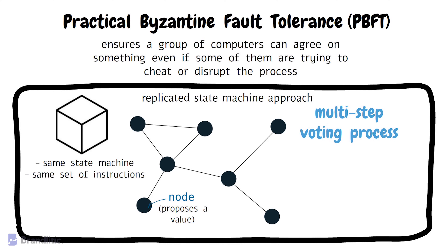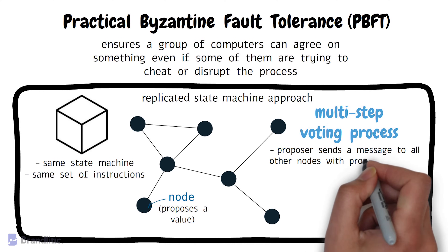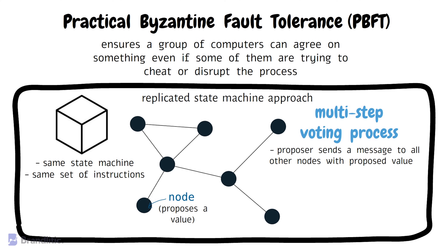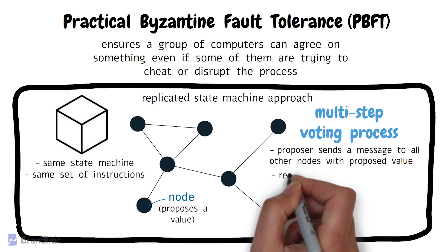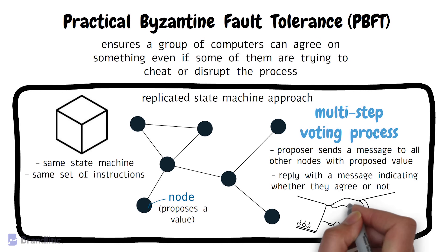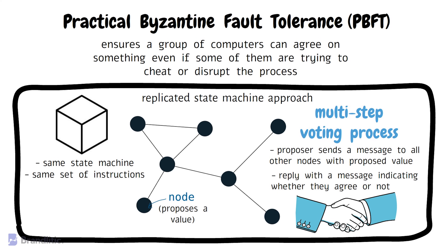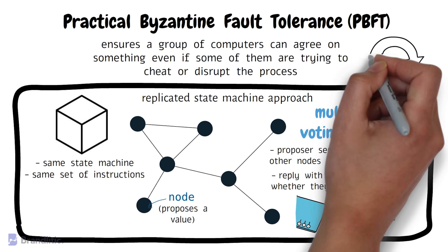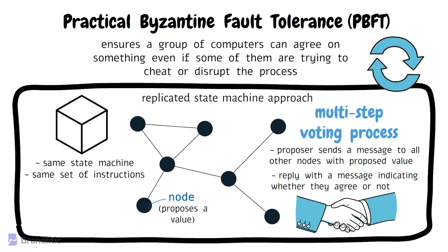In the first step, the proposer sends a message to all other nodes with their proposed value. In the second step, all nodes receive the proposal and reply indicating whether they are agreeing or not. Once the proposer receives a sufficient number of votes, the value is accepted and the state machine is updated with the new value. The process is repeated for each new value that needs to be agreed upon.